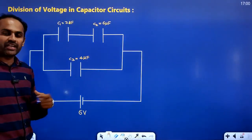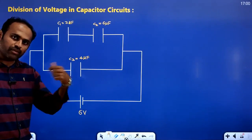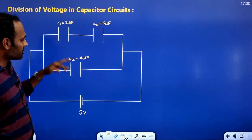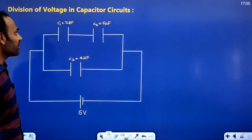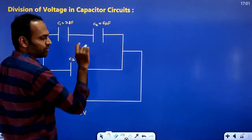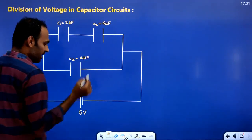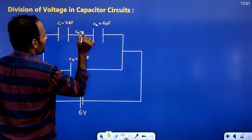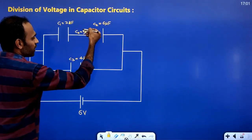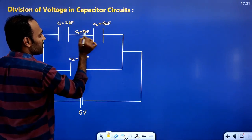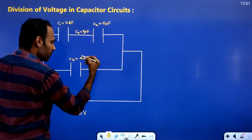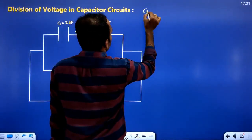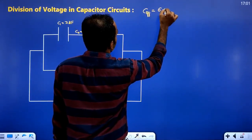The previous circuit had 2 capacitors in parallel with that combination in series with 1 capacitor. Now the reverse: 2 capacitors in series, with that series combination in parallel with 1 capacitor. For effective capacitance: 3 microfarad and 6 microfarad in series gives an effective of 2 microfarad. Then 2 microfarad in parallel with 4 microfarad gives 6 microfarad. So the effective capacitance of this circuit is 6 microfarad.